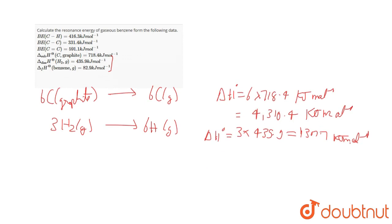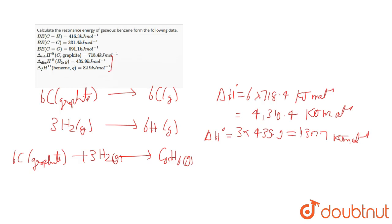Now the last part — the heat of formation of benzene. The equation is: 6C(graphite) + 3H₂(gas) → C₆H₆(gas). Since the standard state heat of formation of H₂ and graphite are both zero, the enthalpy of this equation equals the heat of formation of C₆H₆, which equals the sum of bond energies on the reactant side minus the sum of bond energies on the product side.